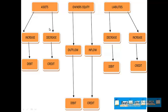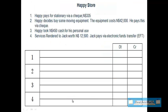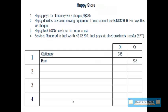So the check relates to bank, which is an asset. The asset decreases, so we should credit the bank. Stationary is an owner's equity item and it's an outflow, so we should debit stationary. Our transaction will look like this: Debit stationary $335, Credit bank $335.